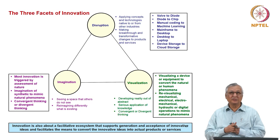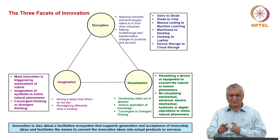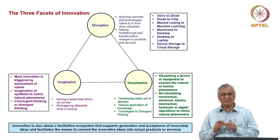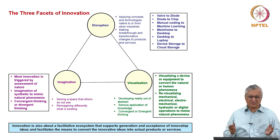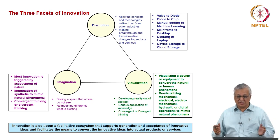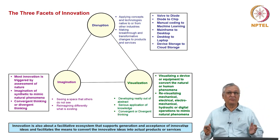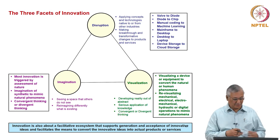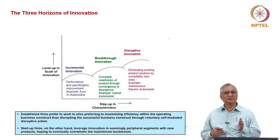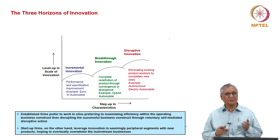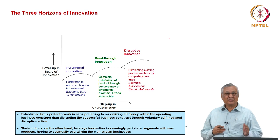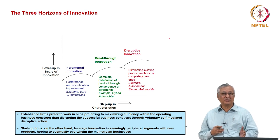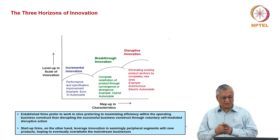And we have got several ideas by which disruption can take place: from valve to diode in the very old radios, from diode to chip, manual coding to machine learning, mainframe to desktop, desktop to laptop, device storage to cloud storage — there is all disruption. All of these things brought different technologies from different industries to make this happen. Now, there are three types of horizon which happen, so the start-up has to decide whether it will be in the incremental innovation horizon, the breakthrough innovation horizon, or the disruptive innovation horizon.